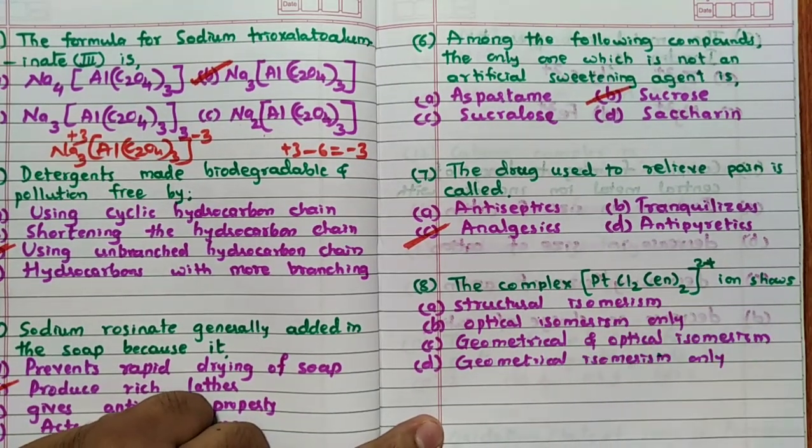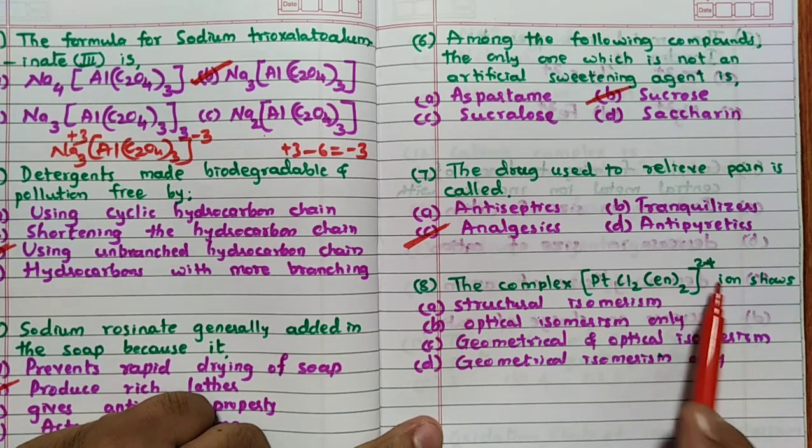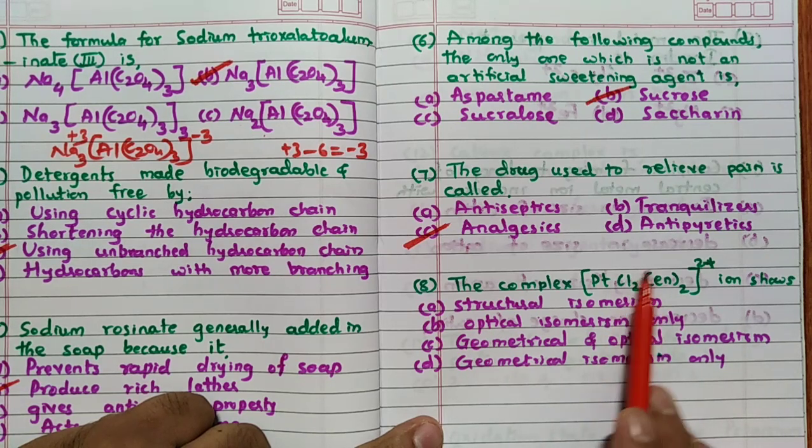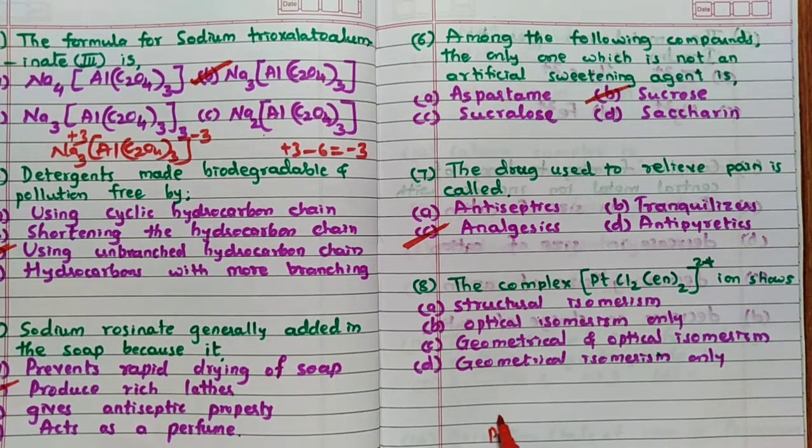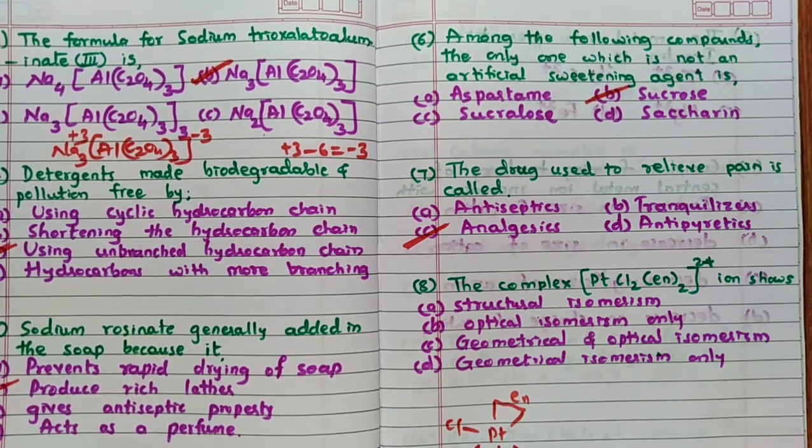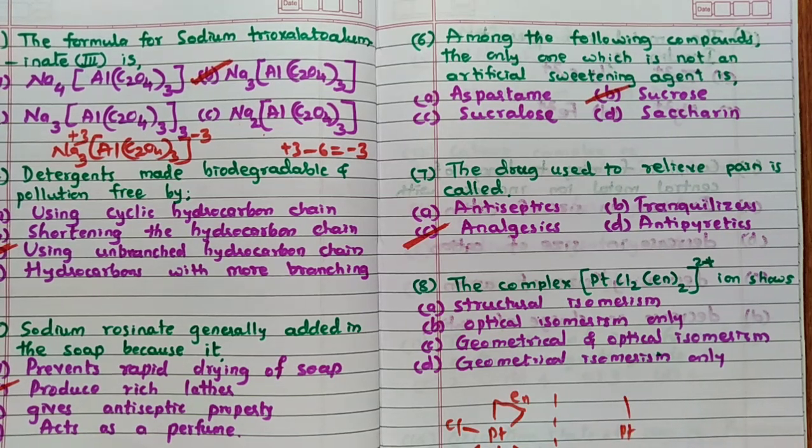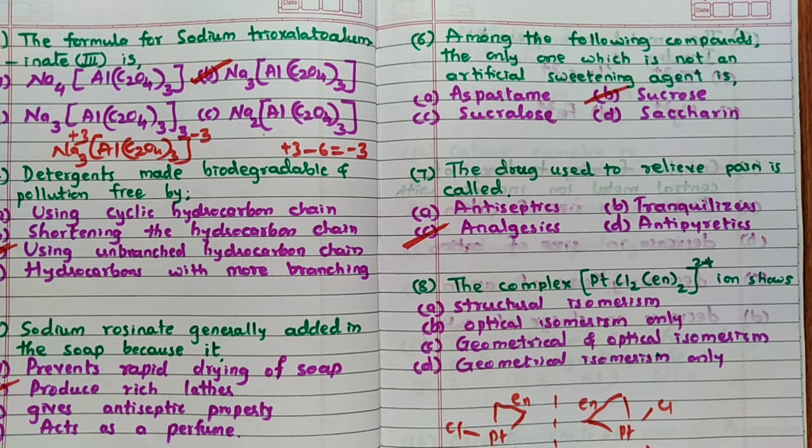Then the complex Pt(Cl)2(EN)2 2+ ion shows. Remember in this particular case, structural isomerism is not possible because outside the coordination sphere ion is not given. Optical isomerism possible here because this can form D and L isomer. For example, here like this platinum, and I can draw it like this octahedral complexities because six coordination number. So this is EN and this is EN and here it is CL, here it is CL. So you can write this mirror image of this, so like this mirror image. So these two EN and these two EN and this is CL, CL. So optical isomerism is possible but not only that is the answer, geometrical isomerism is also possible.